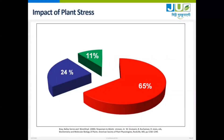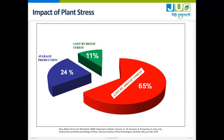The impact of stress can be understood from this slide: abiotic stress accounts for 65 percent of the loss, only 11 percent loss is caused by biotic stress, whereas we get only 24 percent of the potential yield of any crop. And if you talk about this bigger loss caused by abiotic stress, it is a very significant concern.